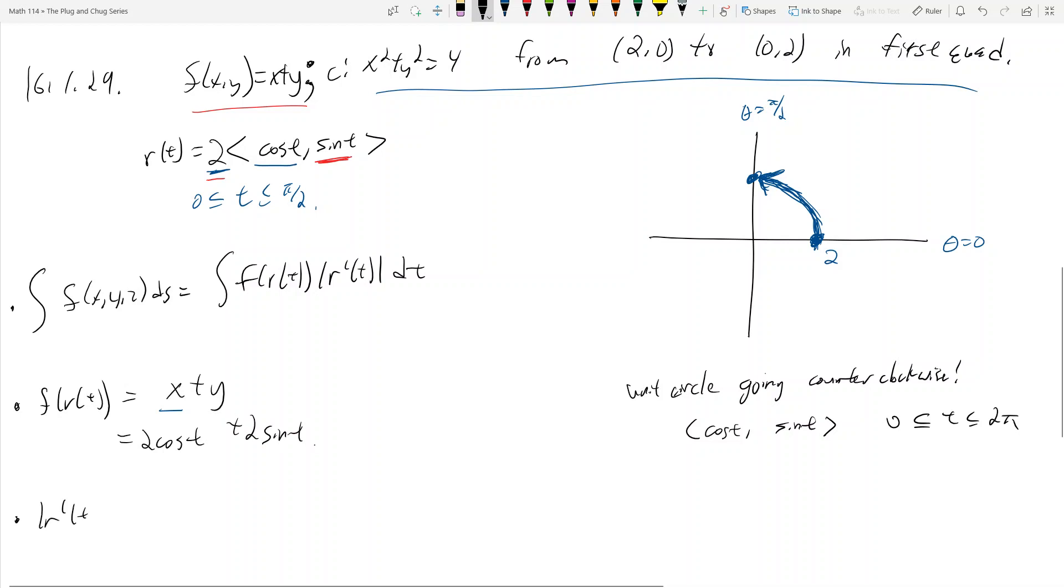What is the magnitude of r prime of t? Well, that's going to equal to the magnitude of negative sine t comma cosine t, or 2 times this. And that's going to be equal to 2 times the square root of negative sine squared t plus cosine squared t. Negative sine t squared plus cosine t squared, but that's cosine squared t. And this in here then just becomes cosine squared plus sine squared, or sine squared plus cosine squared, doesn't matter. So that's 2 times 1, which is 2.